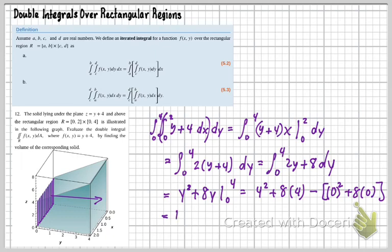This is going to be 16 plus 32, and then that's just going to be that minus 0, and that's what I did up here. So this is going to turn out to be 32, 42, 48. So the answer for this volume is 48.